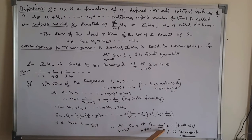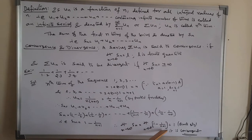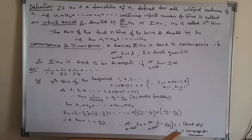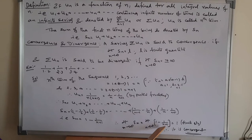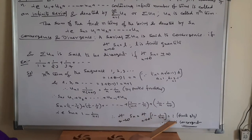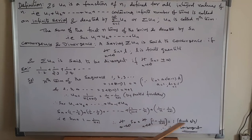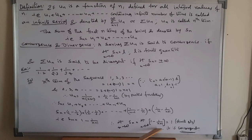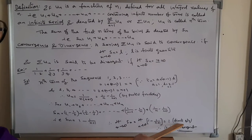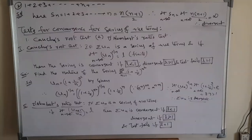Since 1/n tends to 0 as n tends to infinity, the value 1/(n+1) goes to 0, and the answer is 1. We are getting a finite quantity, and that is why we say the series is convergent.